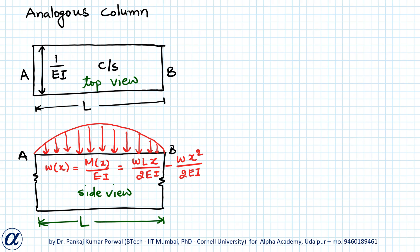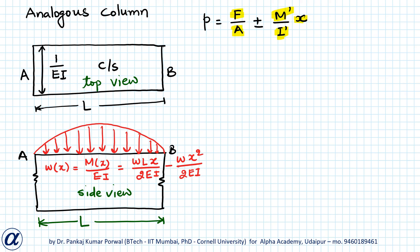The pressure at the base of the column is p = F/A ± M'/I' · x, where F is the resultant force due to the distributed load on the column, A is the cross-sectional area, M' is the moment of the distributed load about the centroidal axis, I' is the second moment of area of the column cross-section about the centroidal axis, and x is the distance of any point from the centroidal axis.